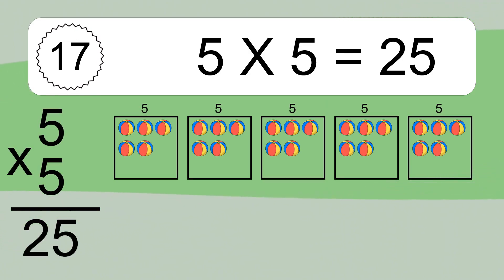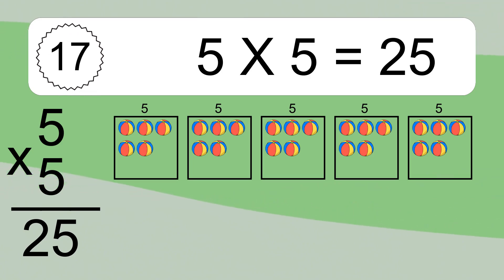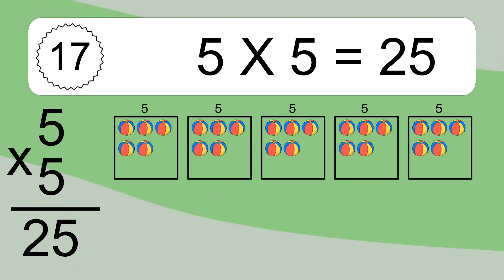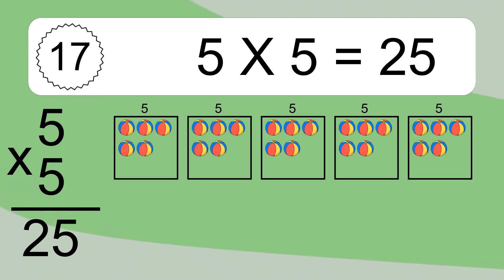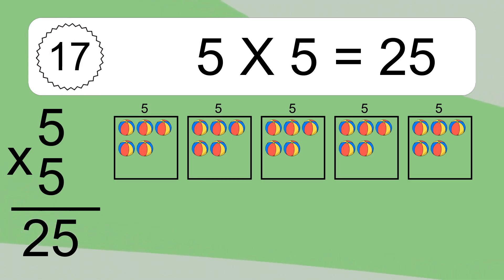5 times 5 equals what? We have 5 boxes, and each box has 5 colorful balls inside. 5 times 5 equals 25.